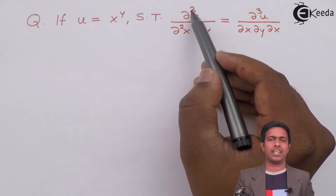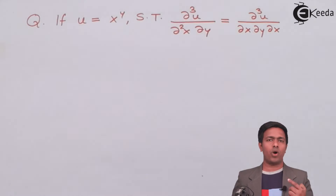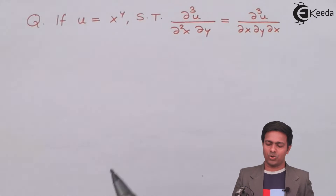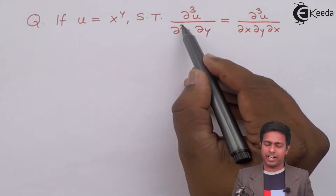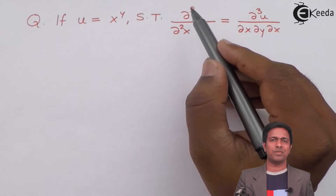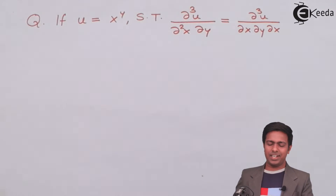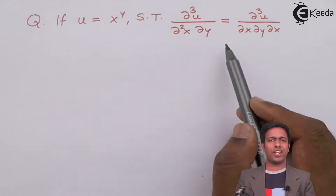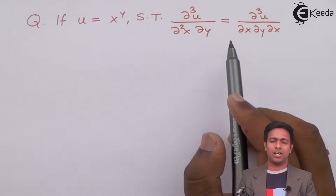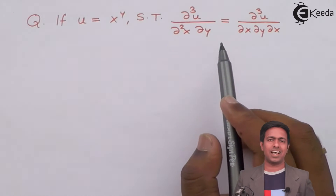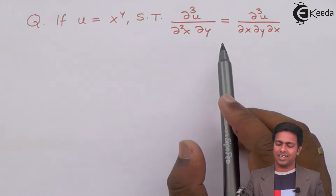Since the degree is greater than 1, this becomes a higher order term — this is the second order and this is the third order term. Let's verify this result. We are going to verify it by finding out the values of LHS and RHS, so let's start.